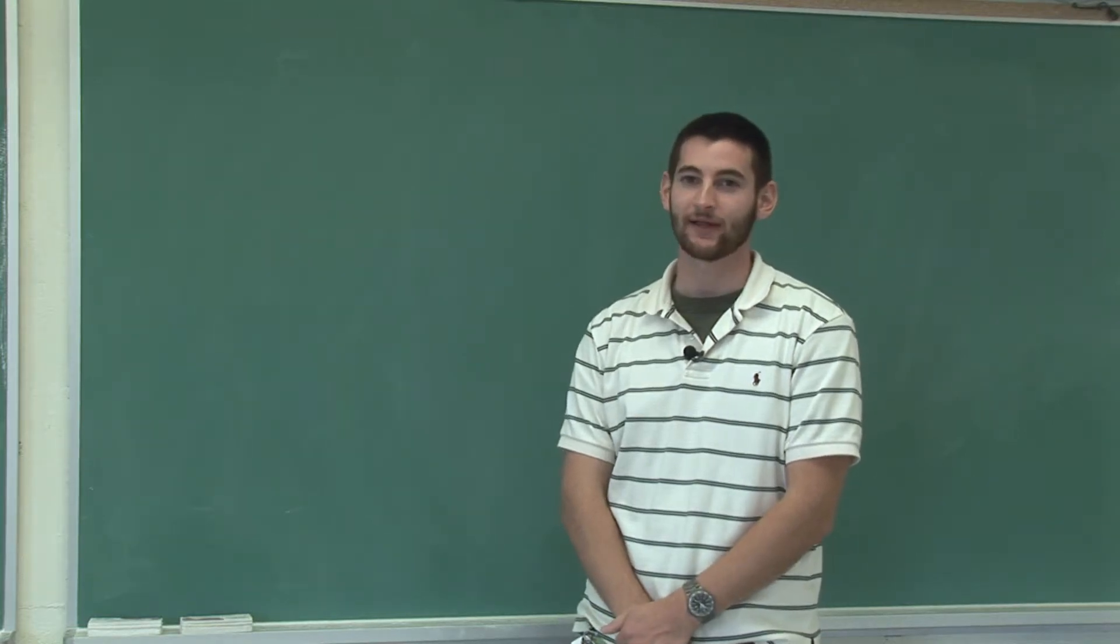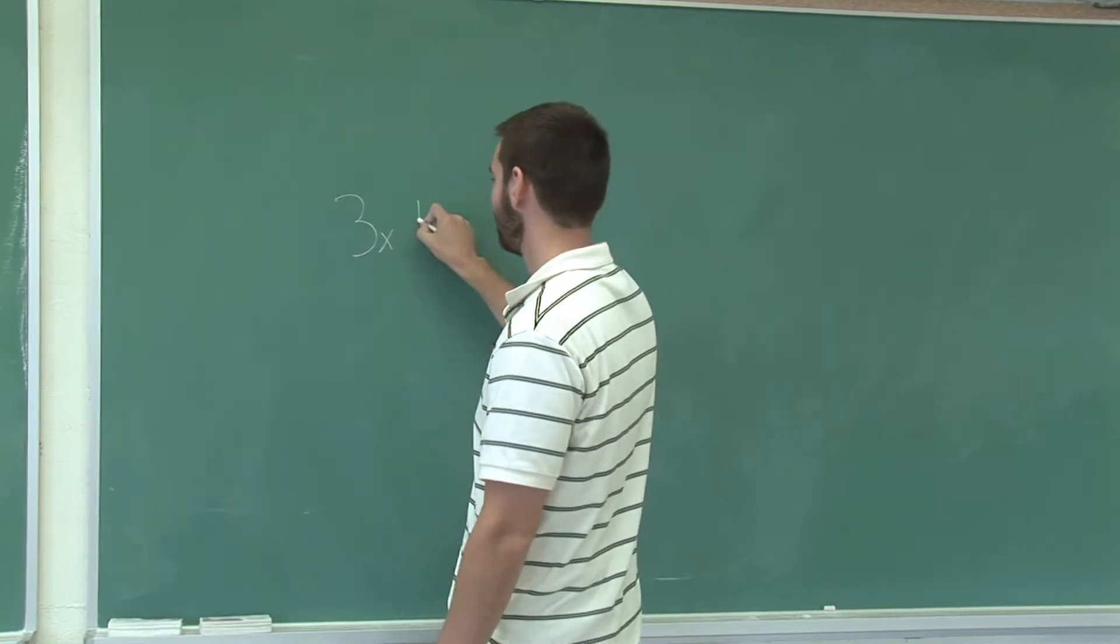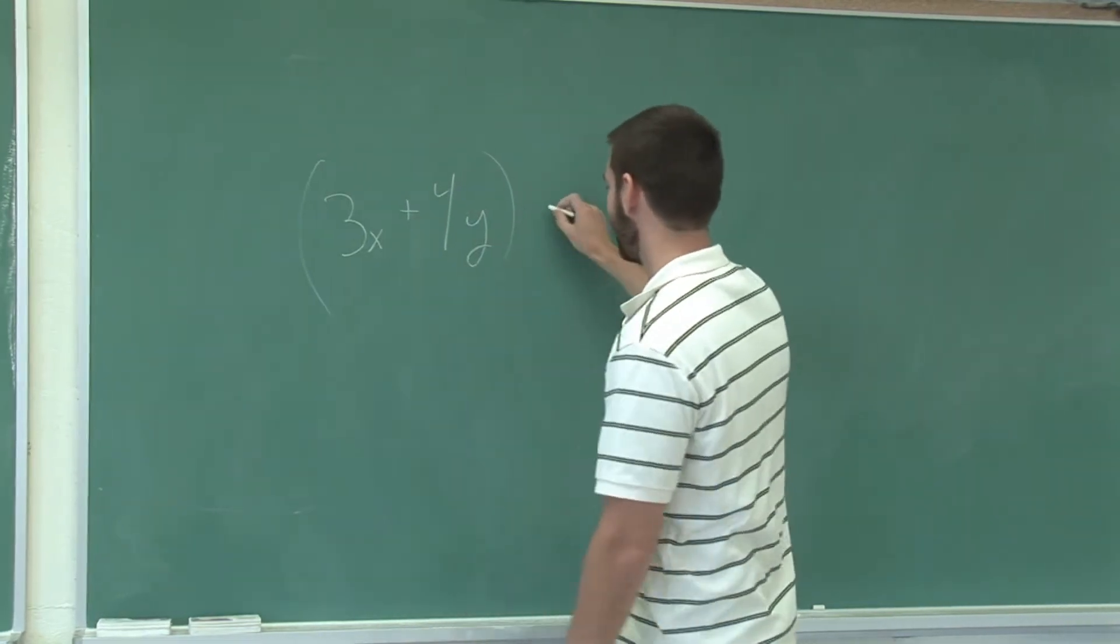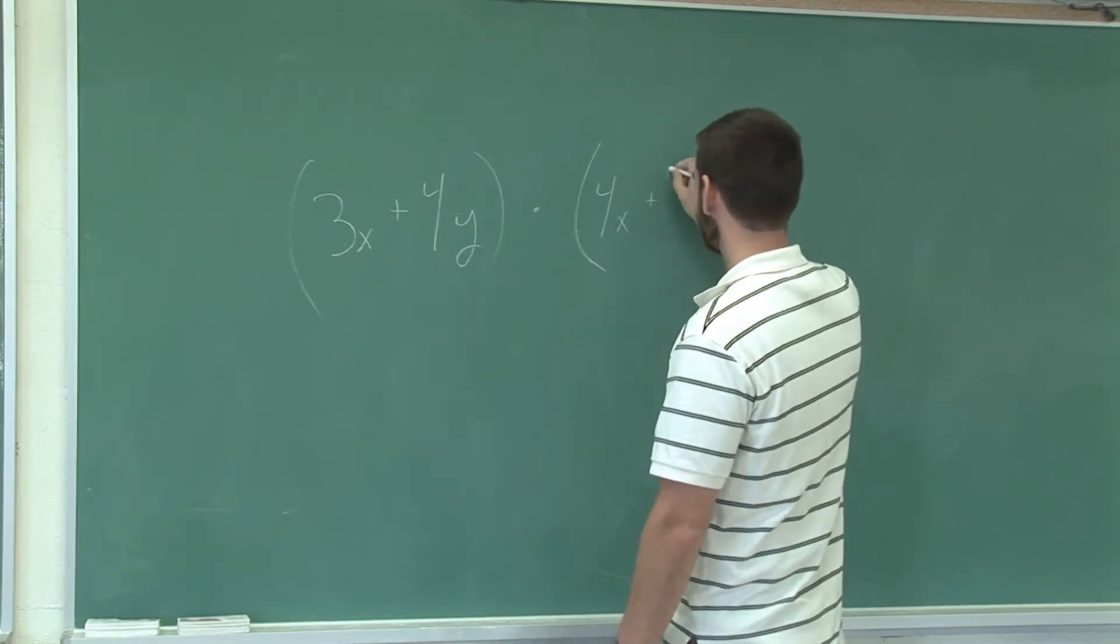Okay, now I'm going to show you how to multiply polynomials. Let's take a polynomial, 3x plus 4y, that's a polynomial, and we'll multiply that by 4x plus 2y.